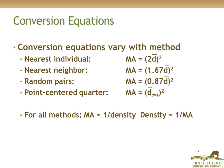There are conversion equations associated with each method. They have similar formats but different conversion factors. For example, if using the random pairs method, you multiply your average distance by 0.87 and then square that to determine a mean area for the transect. You then convert that mean area to density by taking the reciprocal. Remember that the transect is the sampling unit.